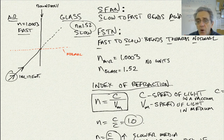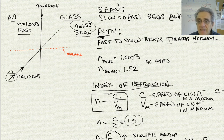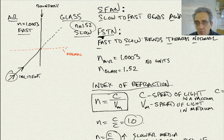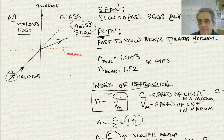We know the light is going from air to glass, so we're going from fast to slow. Looking at our two memorization techniques, FSTN — fast to slow means we are bending towards the normal.